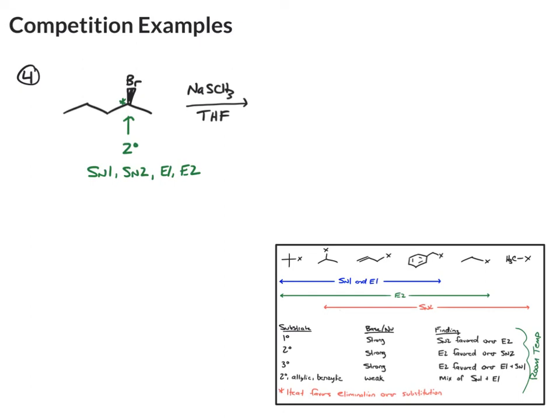Now we look at the reagent, NaSCH3. We want to break that up and think of Na plus, SCH3 minus. Nitrogen and oxygen with a negative charge are bases and nucleophiles. Other atoms, like a sulfur, this is really only a nucleophile. So that means this is going to favor SN2. Finally, the solvent, we have THF. That's polar aprotic. That favors E2 and SN2.